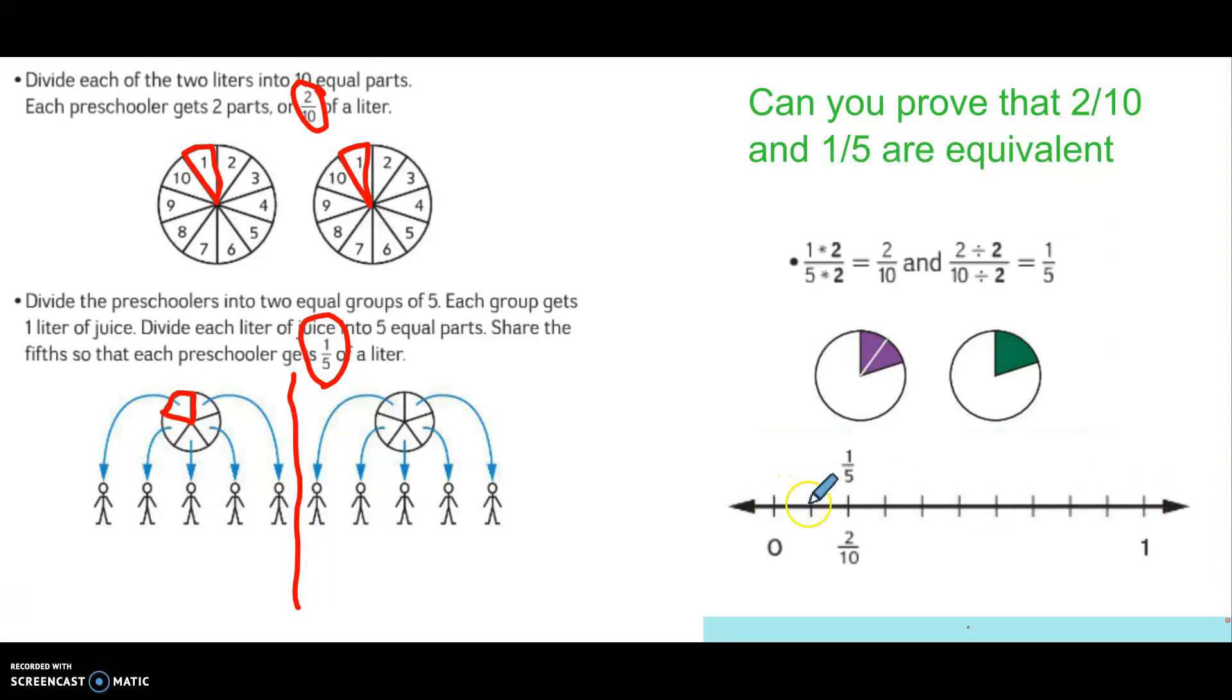So here, one, two, here's my two-tenths. Now, how can I make this number line fifths? Let's see. By going every other, one, two, three, four, five. This number line also shows fifths.